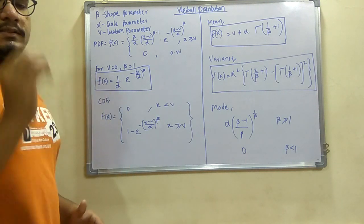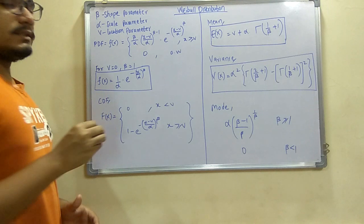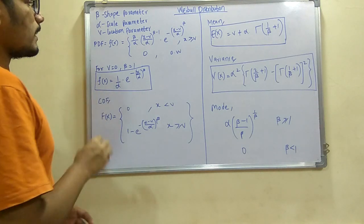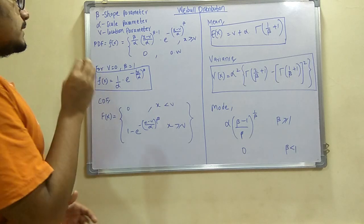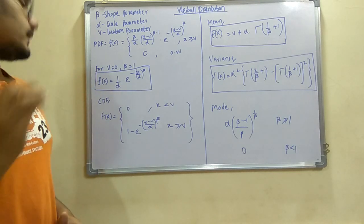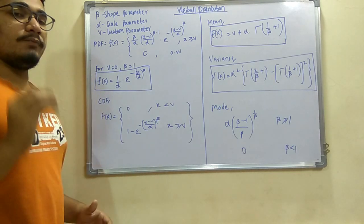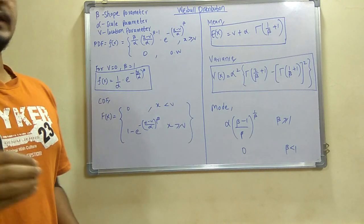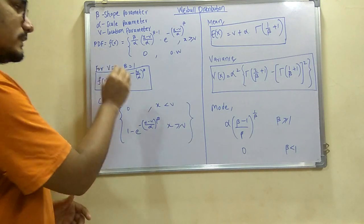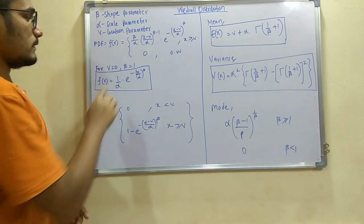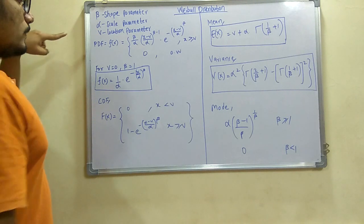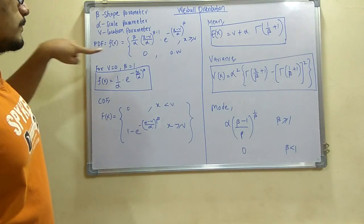Next, for the value of V, if the location parameter is 0 and if the shape parameter beta is 1, then we have f(x) as 1 divided by alpha, e raised to minus (x divided by alpha) raised to beta. So this parameter has just evaluated over the upper one. When you put the values of V equals 0 and beta equals 1 into this, you will get this equation.